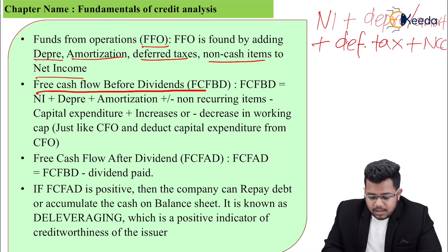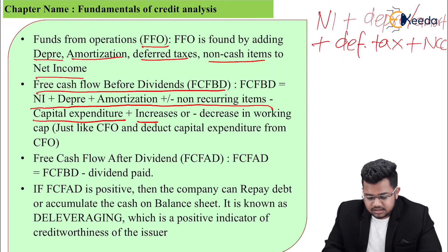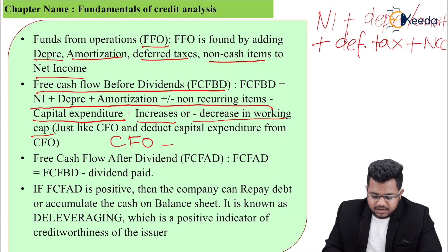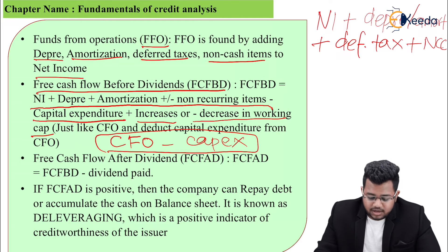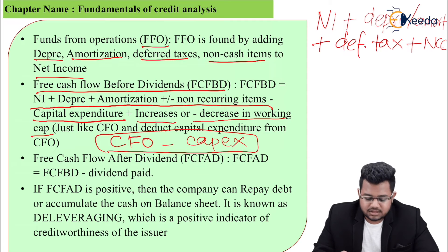FCFBD, free cash flow before dividends. The formula is: net income plus depreciation plus amortization, plus or minus non-recurring items, minus capital expenditure, plus increase or minus decrease in working capital. If you can't remember the full formula, just remember this is CFO minus CAPEX. Everything else — depreciation, amortization, changes in working capital — was already part of CFO. Then deduct CAPEX to get FCFBD.